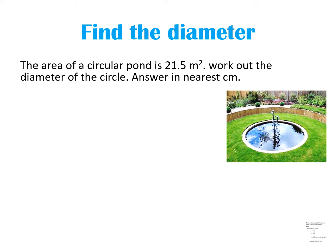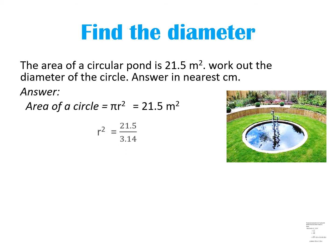The area has been given, so start with the area formula. What is the area of a circle formula? Pi r square — this is the formula for the area of a circle. The area of the circular pond is 21.5 meter square. Keep r square on the left side and bring pi to the right-hand side — it will be in the denominator. So we have to divide by the pi value: 21.5 divided by 3.14. This answer is r square.